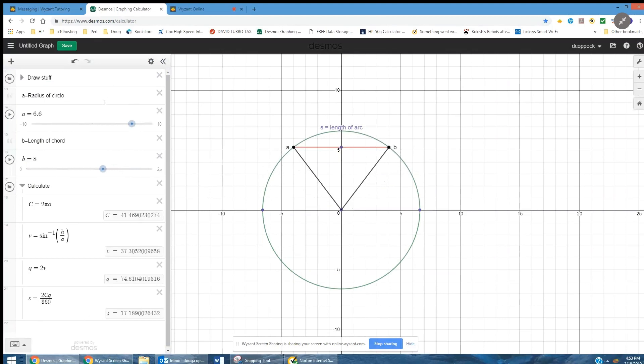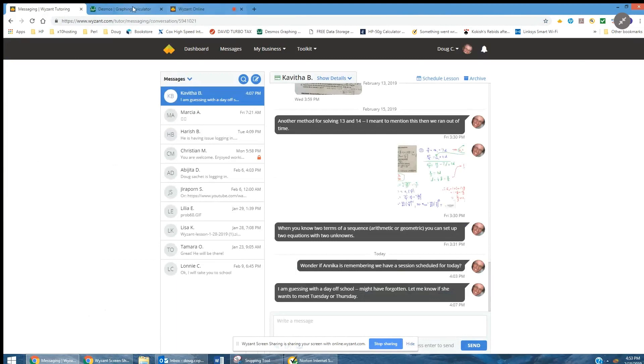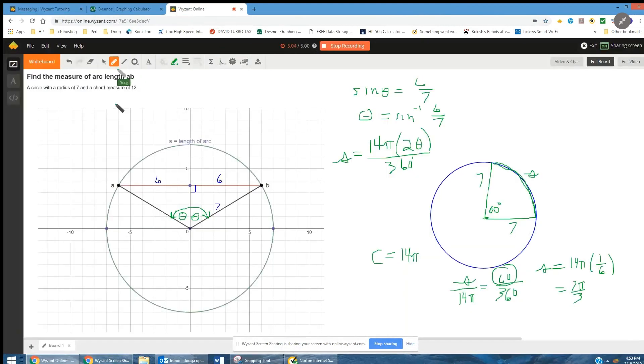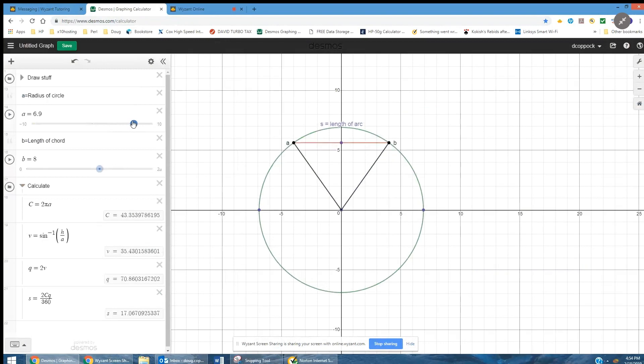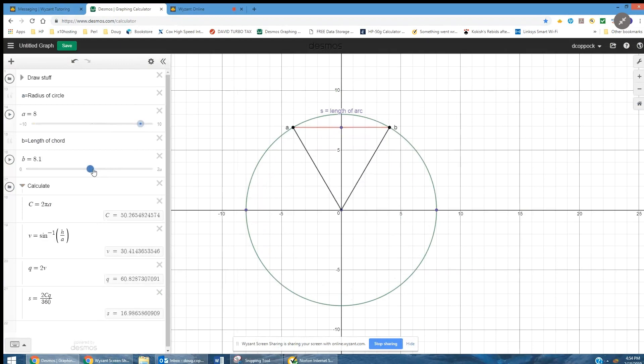So I think there was another problem posed where the radius was maybe 8 and the chord length was 10, something like that. So radius 8, chord length 10, there you go.